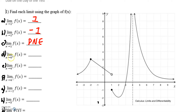Part d: if I'm looking at the x value of four from the positive or right side, my graph starts over here. But as I approach four, it looks like I'm getting very close to this vertical asymptote, and I'm increasing all the way to positive infinity. So my limit from the right is positive infinity.